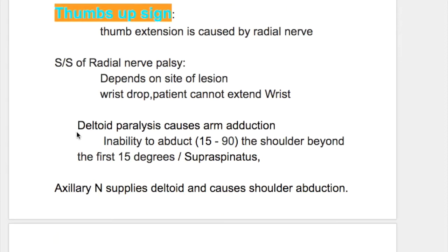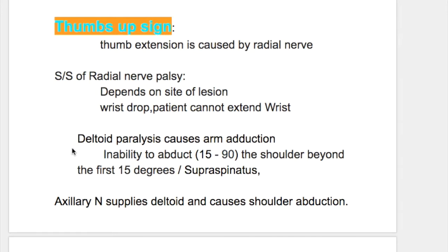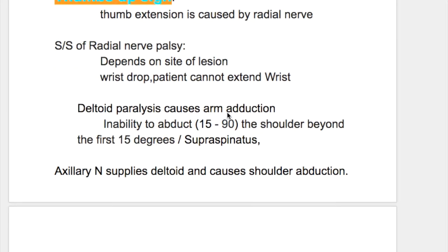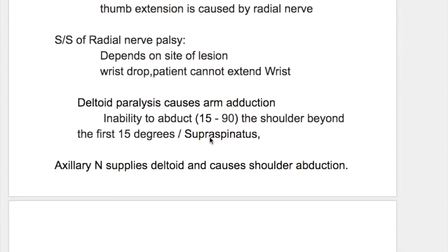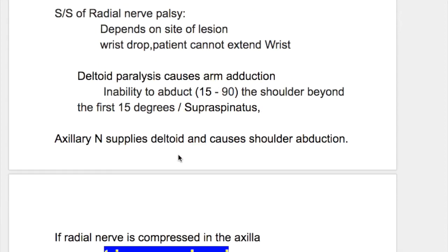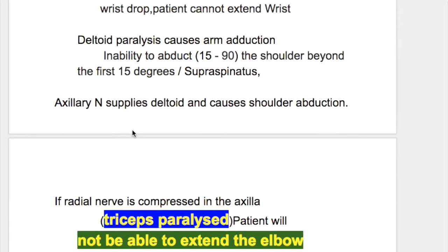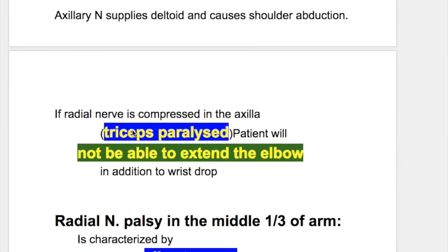Why is the shoulder adducted? Deltoid paralysis causes arm adduction. The deltoid is responsible for abduction of the shoulder from 15 degrees to 90 degrees, and for the first 15 degrees it is the supraspinatus that causes abduction. The axillary nerve supplies the deltoid.